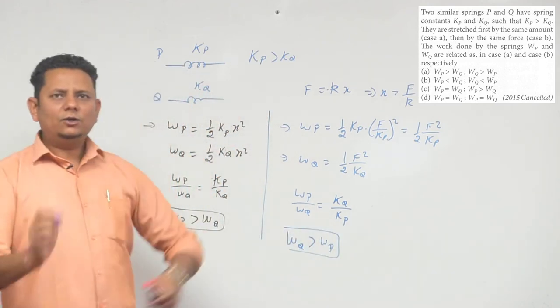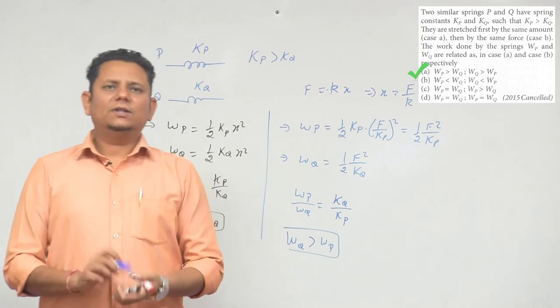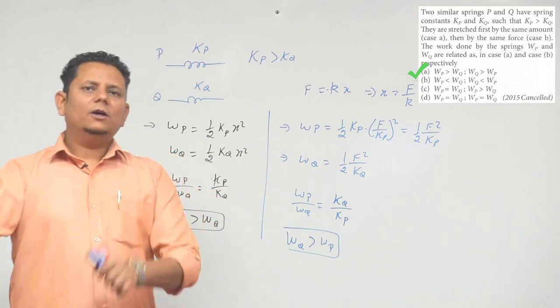So in the second case, work done by Q will be greater than P. Based on this, we can say that option number A would be the right answer.